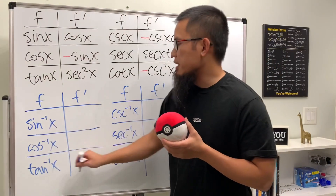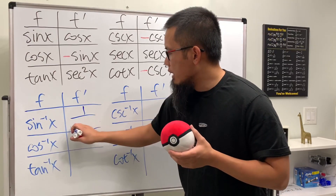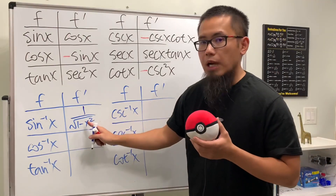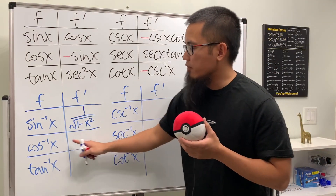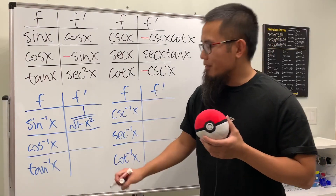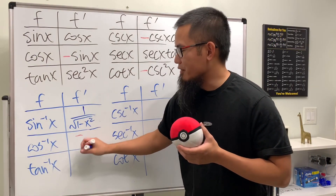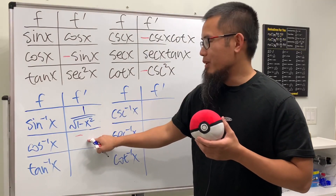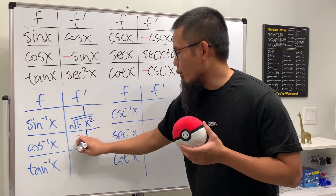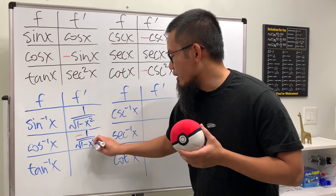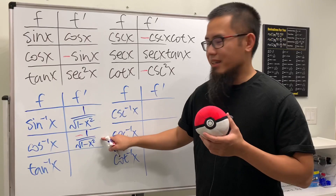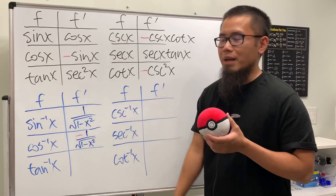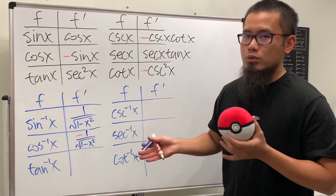The derivative of inverse sine x is 1 over the square root of 1 minus x squared. And if you remember this, you know the derivative of inverse cosine x for free. First, it's negative because it has a 'c'. Then you just write 1 over the square root of 1 minus x squared. So the derivative of inverse cosine x is just the negative version of that. You can check my other video for the derivation.